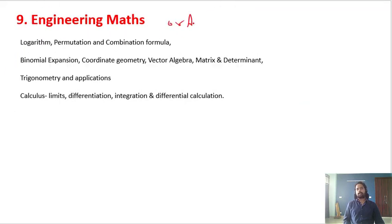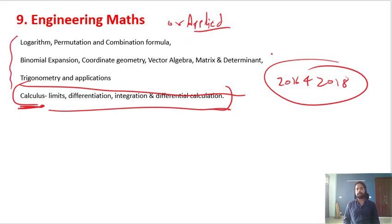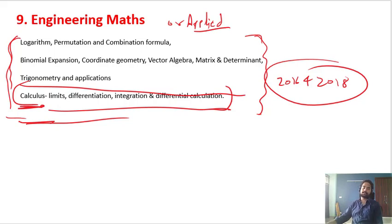Last topic is Engineering Math or Applied Math. If I talk about the previous year papers, I have only seen questions from calculus in 2016 and 2018. But in diploma, you cover all these topics. When you are studying in your diploma, you have covered all these topics. So I suggest all of you, please study all these topics as you have studied in diploma, because from any topic you can have questions in your exam. This syllabus is based on my previous year analysis of 2016 and 2018.